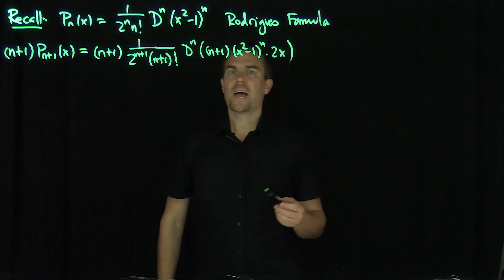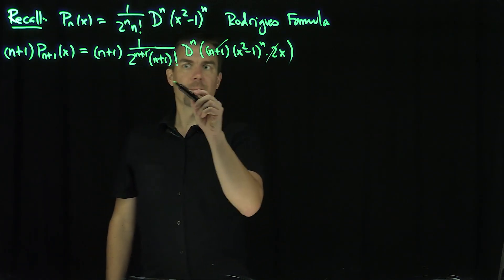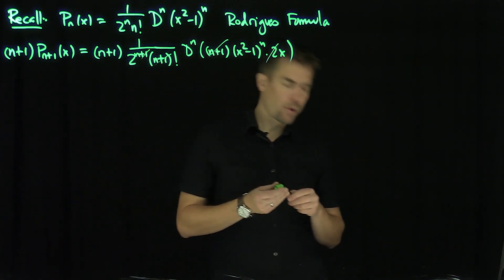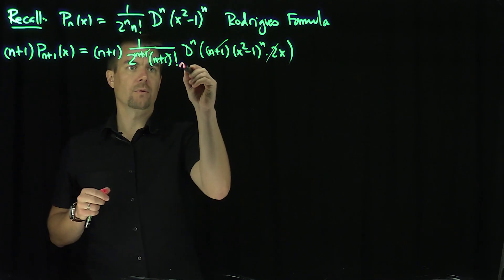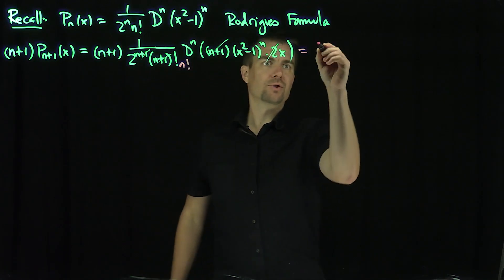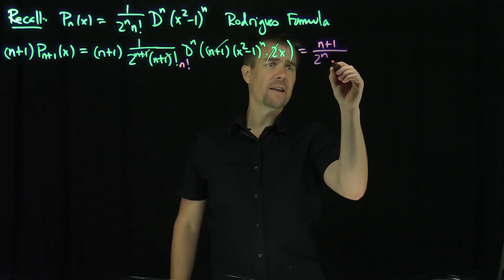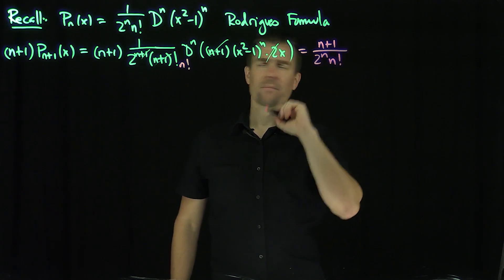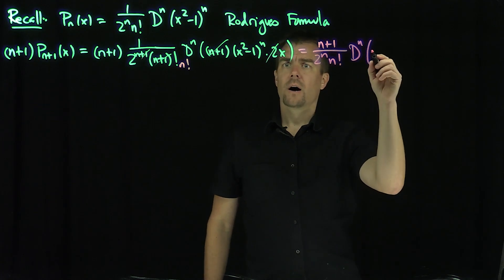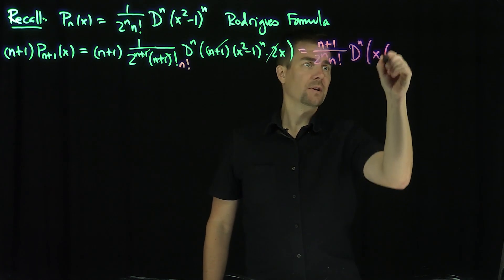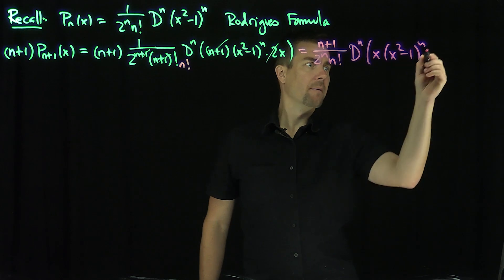And this is what we get. Now the 2 and the (n+1) cancel with the (n+1) factorial, giving me n factorial. So this turns into (n+1) over 2 to the n, n factorial, times the nth derivative of x times x squared minus 1 to the power n.